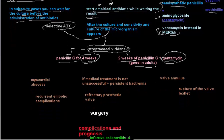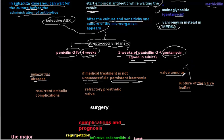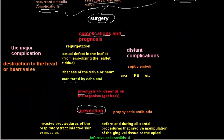Sometimes medical treatment is unsuccessful — you may have persistent bacteremia despite four weeks of good antibiotic therapy, myocardial or valvular abscess, valve annulus involvement, or rupture of valve leaflets. Refractory prosthetic valve or recurrent embolic complications are also indications. If one or more of these conditions exist, you must move to surgical treatment.